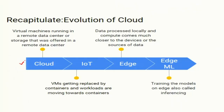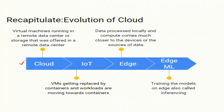Edge is the topic of today's lecture. Edge also has the advantage of applying artificial intelligence and machine learning, which was the de facto standard for cloud computing. Cloud is now used to train the model, whereas the inferencing is to be carried out on the edge, also called the inferencing layer. So let us go ahead and understand about edge computing.